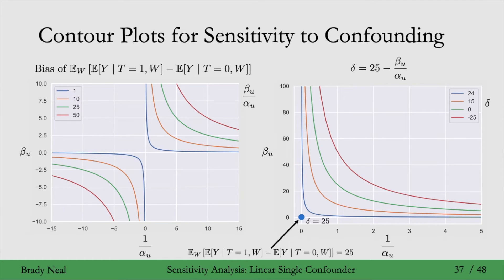It could be that you don't want to argue that delta is greater than zero — you might want to argue it's greater than 15, in which case the sensitivity parameters 1 over alpha_U and beta_U would need to fall on the side of the orange curve where delta is greater than or equal to 15. These contour plots are a really useful tool that sensitivity analysis gives us.